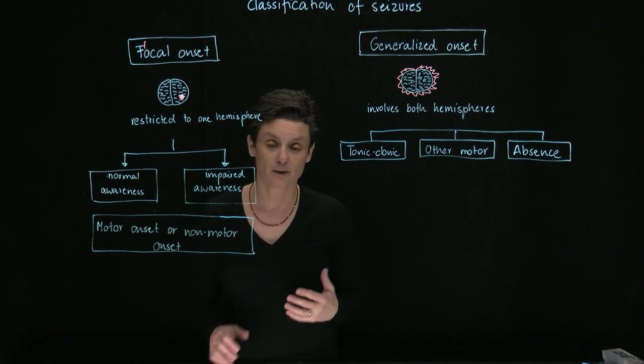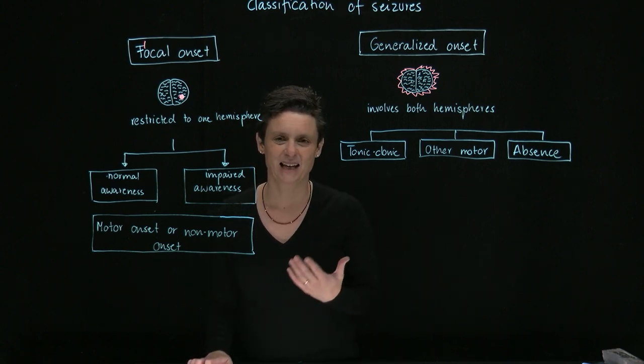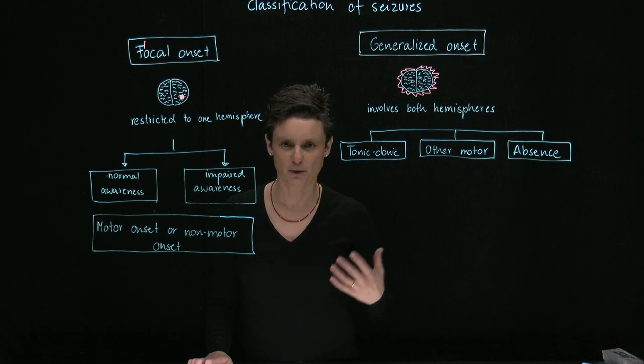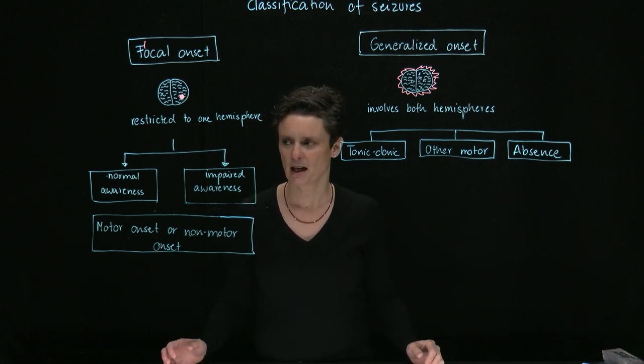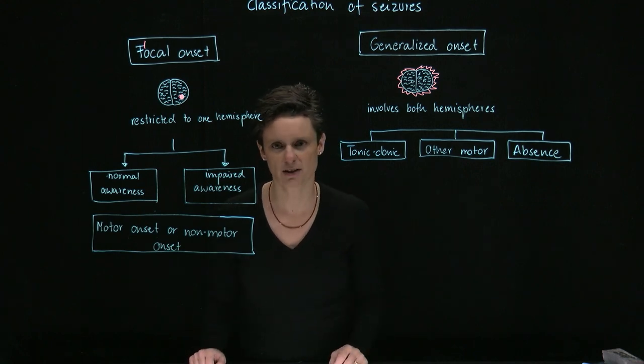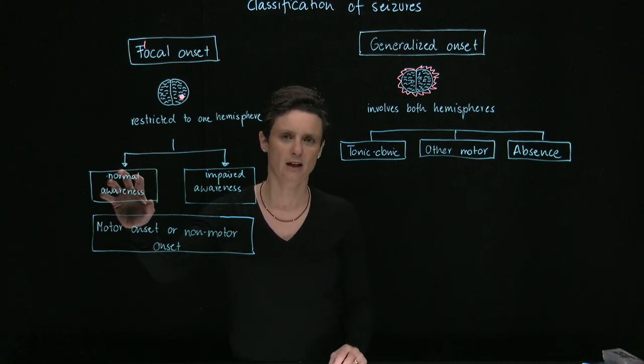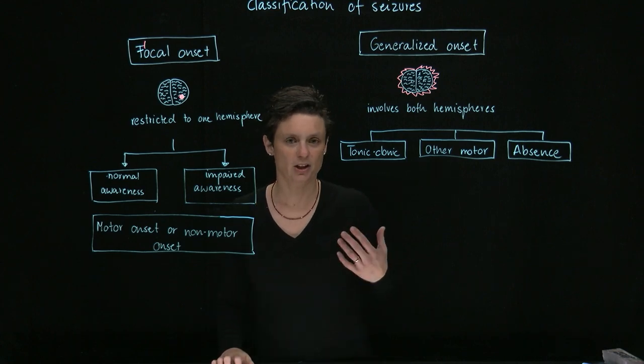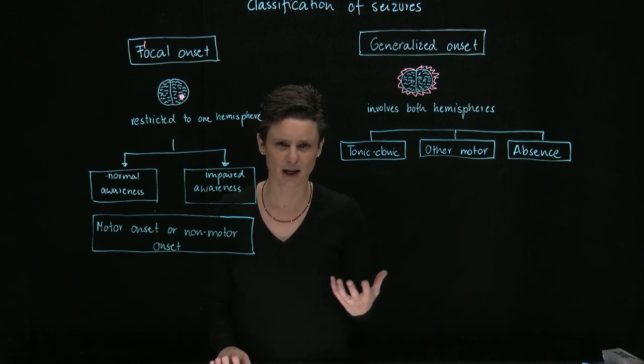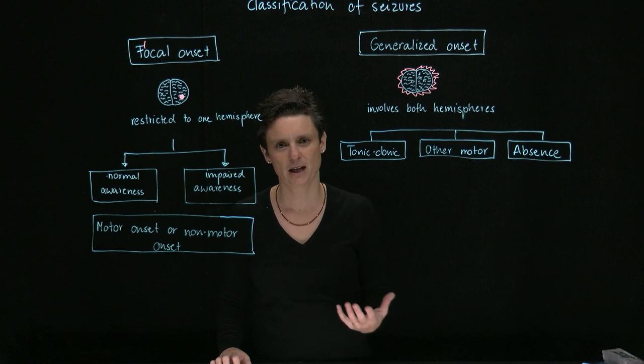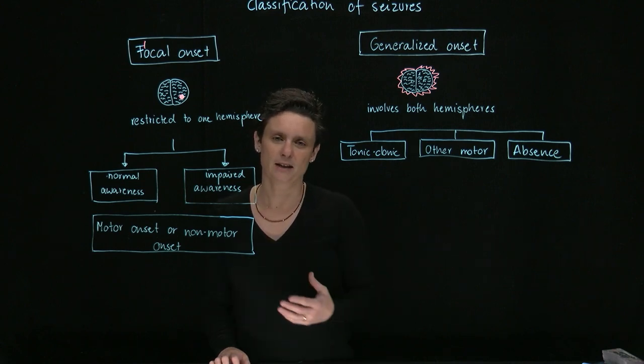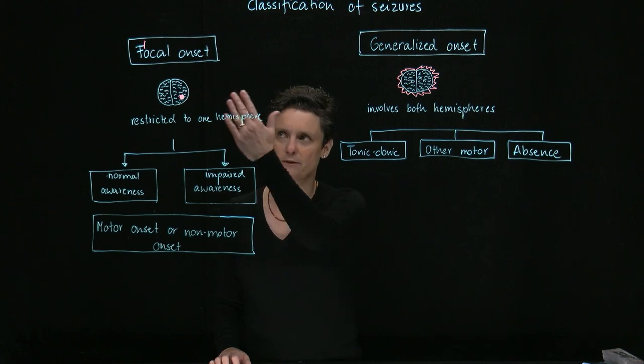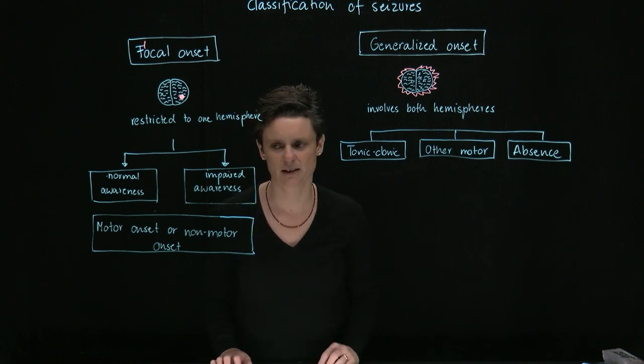That means, for example, if a patient has this seizure in the left part of the frontal lobe but can report to you what he or she is experiencing, then obviously the consciousness is not impaired and we would fall into this category. In contrast, if the patient cannot report and there's impaired consciousness, if you talk to the patient, the patient is not going to respond, then this would fall into the category focal onset seizure with impaired awareness.